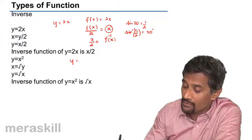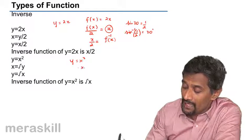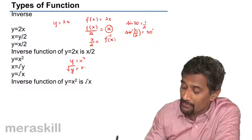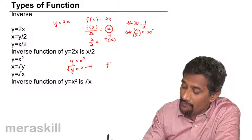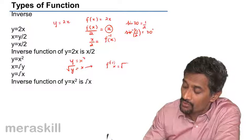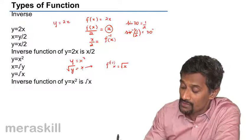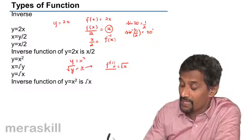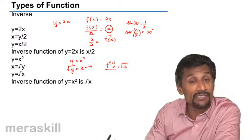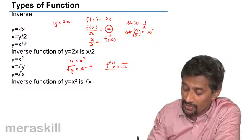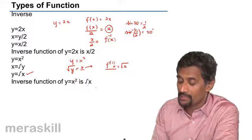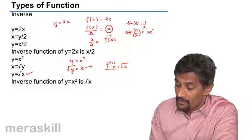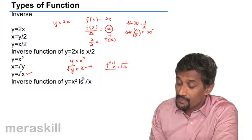Similarly, for y = x², we get x = √y. We do the same thing: replace x with F⁻¹(x) and replace y with x, giving F⁻¹(x) = √x. So y = √x is the inverse function of y = x².